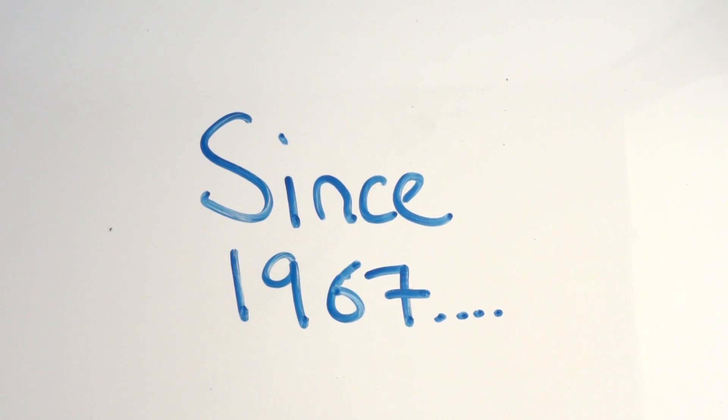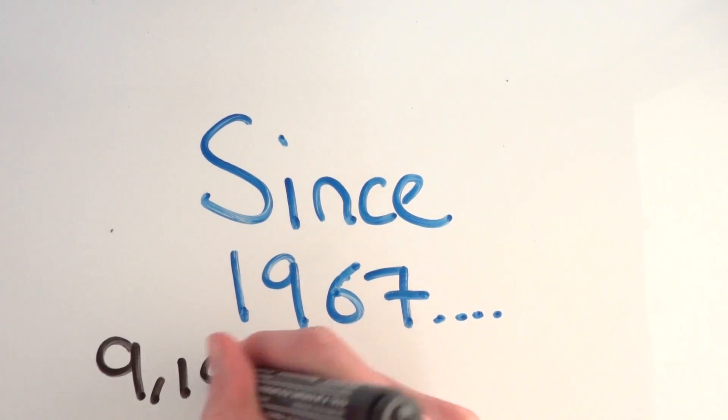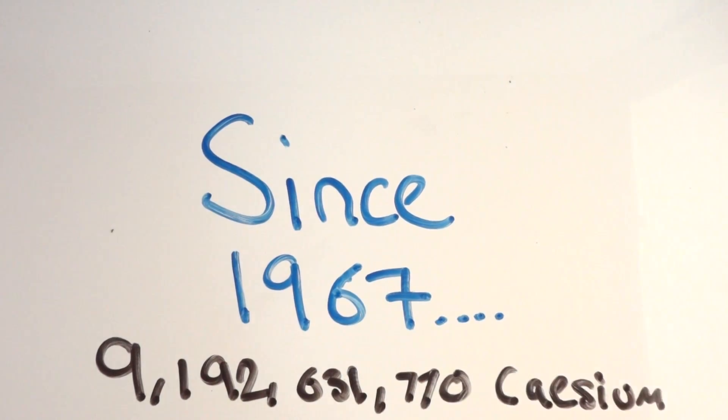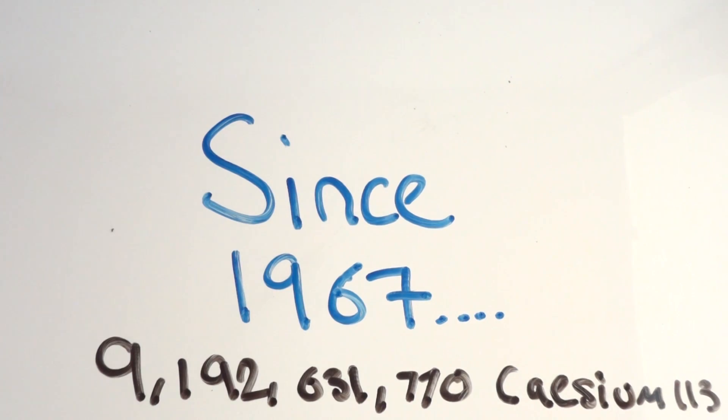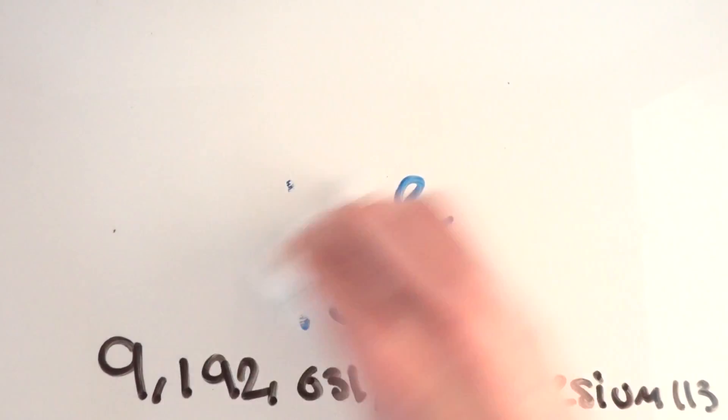Since 1967 we have defined the second as the duration of 9,192,631,770 periods of the radiation corresponding to the transition between two high levels of the ground state of the cesium-133 atom.